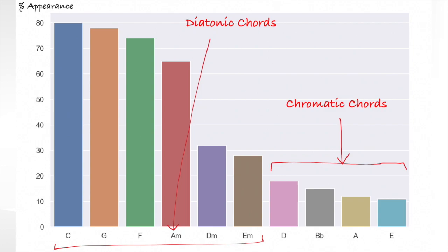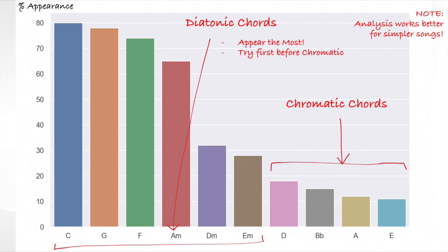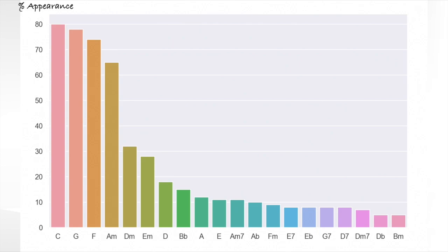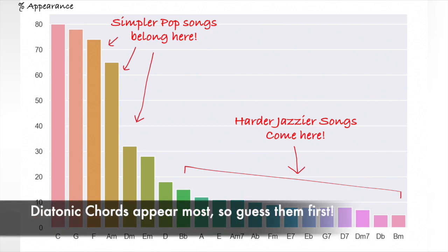When we are just starting out in learning how to identify chords, we should try out the diatonic chords before the chromatic chords. More specifically, when guessing chords in a song, chances are a chord is one of the six diatonic chords. Of course, this insight works better for simpler songs and becomes less true as songs become more difficult and jazzy. The simple pop songs belong to the left side of the chart, while the more difficult jazzier songs belong to the right side. Diatonic chords make up the bulk of chords in most songs.